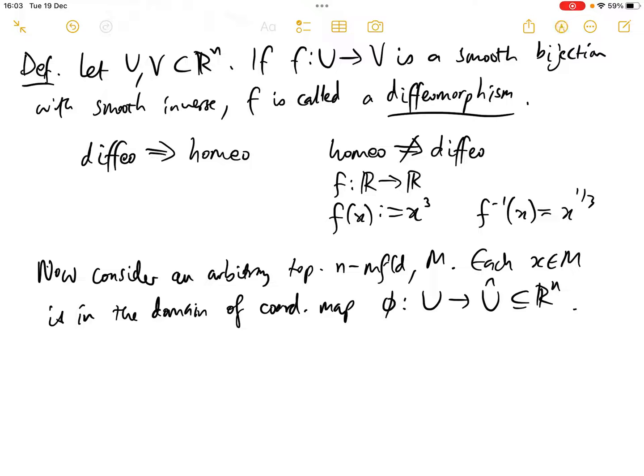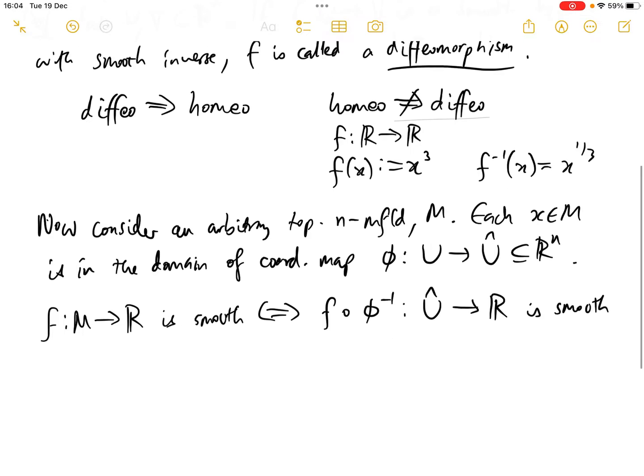Then a plausible definition of a smooth function on M would be to say that f from the manifold M into the real numbers is smooth if and only if f composed with phi inverse, which goes from U-hat into R, is smooth in the sense of ordinary calculus. But note that such a definition would only make sense if this property is independent of the choice of coordinate chart.